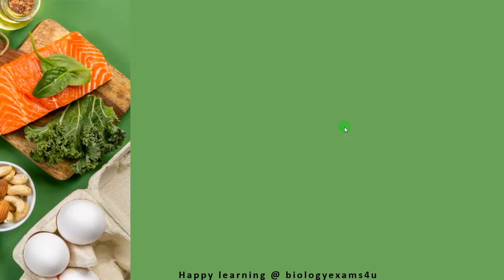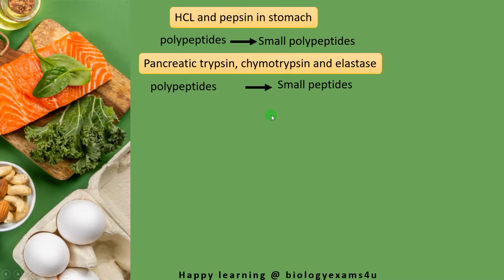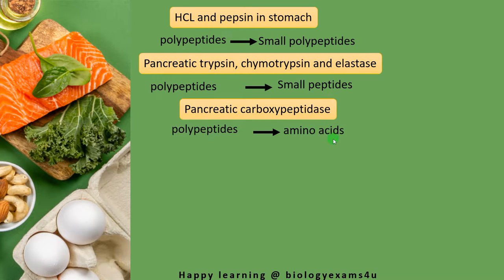Now moving into the digestion and absorption of proteins. The first site of protein digestion is the stomach. Hydrochloric acid present in the stomach denatures the protein. Then pepsin, the enzyme that acts at acidic pH, converts these polypeptides or long proteins into small polypeptides. Then pancreatic trypsin, chymotrypsin and elastase released by the pancreas convert polypeptides into small peptides. Then pancreatic carboxypeptidase converts polypeptides into amino acids.